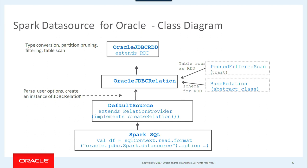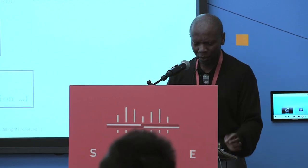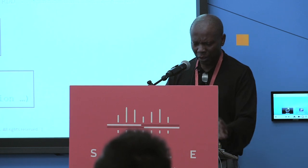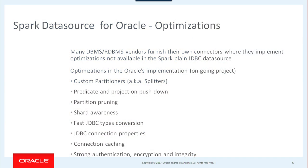They give you more capability for partitioning — more efficient ways to slice things. I'm showing you the class diagram of what we are building for the Oracle database. At the bottom you start with the data frame instruction from your application, then we use the default data source. From there we have the Oracle JDBC Relation, then the Oracle JDBC RDD, which is where the actual table access happens — where all the scans occur, type conversion, and so on.